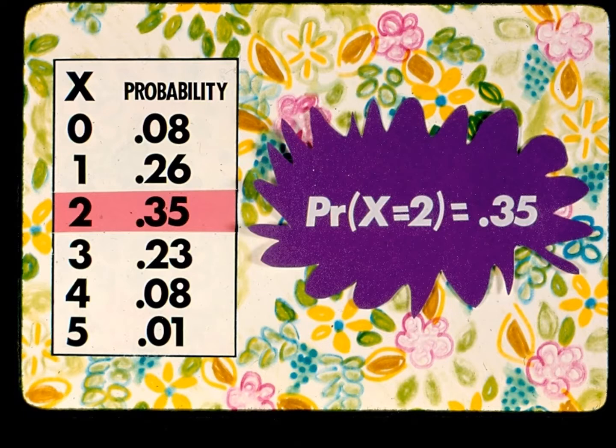In usual notation, we write such statements using the form: probability of x equal 2 equals 0.35. Familiarity with this notation will be crucial throughout this slide series. Notice the capital P with an R stands for probability.